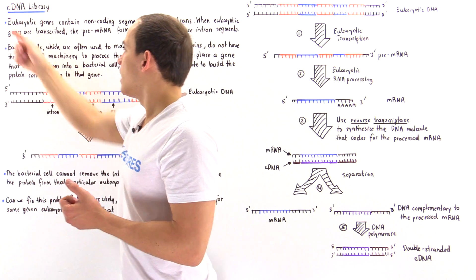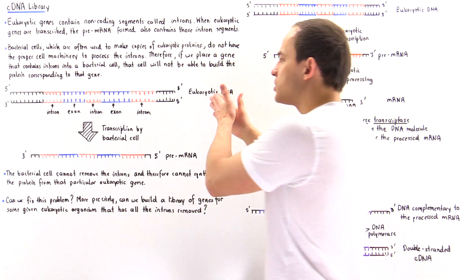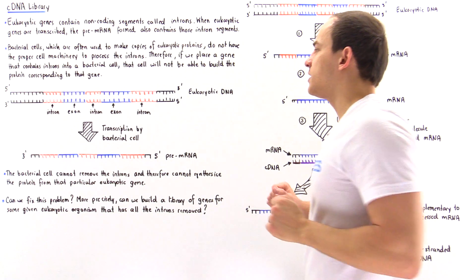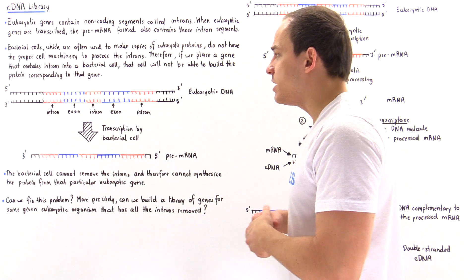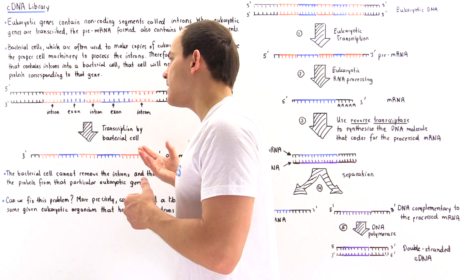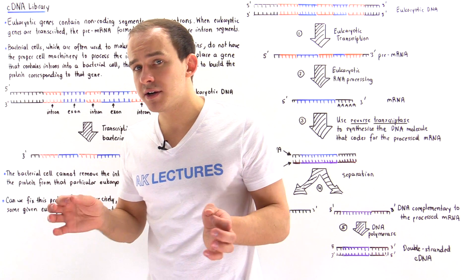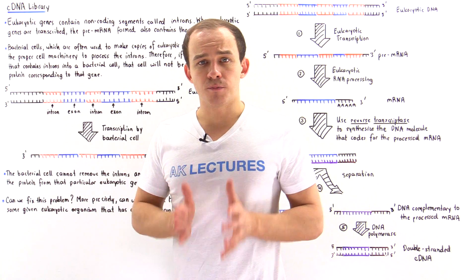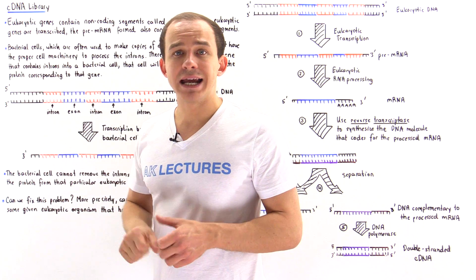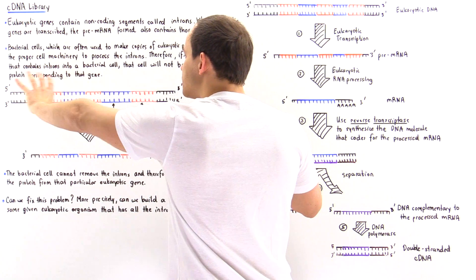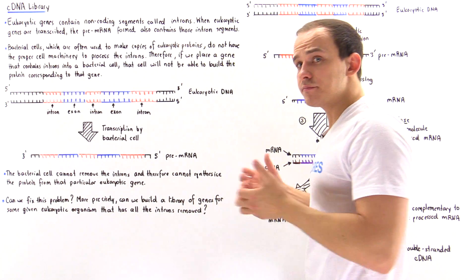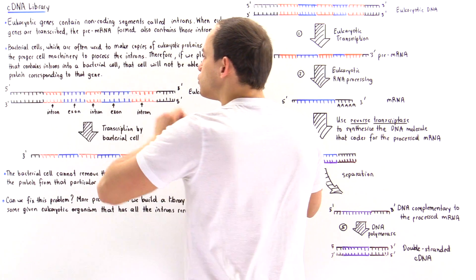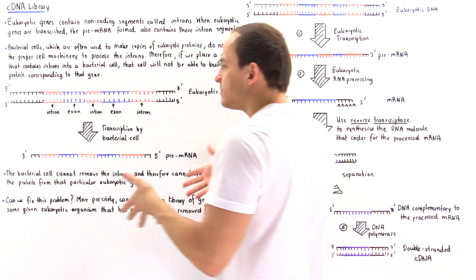If we take a eukaryotic DNA molecule — where the colored portion is the gene that codes for some particular protein — the question is: can we place this eukaryotic DNA inside a prokaryotic bacterial cell in this form and expect that bacterial cell to form any useful protein? The answer is no. That's because once placed inside the bacterial cell, we have intron sections shown in orange and exon sections shown in blue.